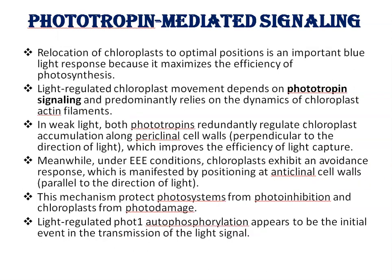Mechanism of action. Relocation of chloroplasts to optimal positions is an important blue light response because it maximizes the efficiency of photosynthesis. Light-regulated chloroplast movement depends on a phototropin-sigma link and predominantly relies on the dynamics of chloroplast actin filaments. When light is weak, both phototropins regulate chloroplast accumulation along periclinal cell walls, perpendicular to the direction of light, which improves the efficiency of light capture. Under strong light conditions, chloroplasts exhibit an avoidance response, manifested by positioning at anticlinal cell walls, meaning parallel to the direction of light.